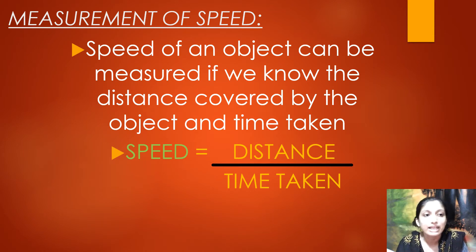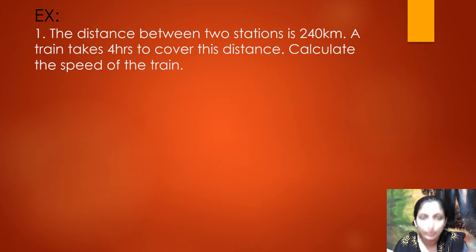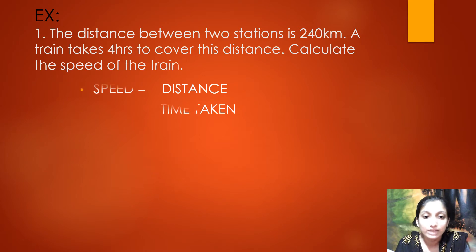Let us calculate the speed with the help of an example. The distance between two stations is 240 km and a train takes four hours to cover this distance. Calculate the speed of the train. To calculate the speed we use the formula: speed equals distance divided by time taken.